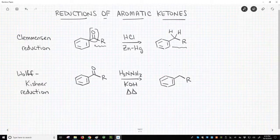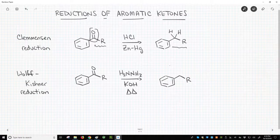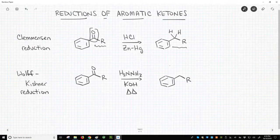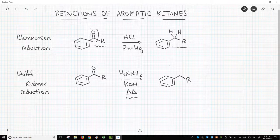The reagents for the Clemmensen reduction are HCl and zinc amalgam, a mixture of zinc and mercury metal. The reagents for the Wolff-Kishner are hydrazine, H2N-NH2, KOH, and the dreaded double delta. That means lots of heat.